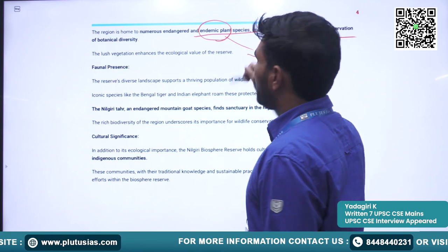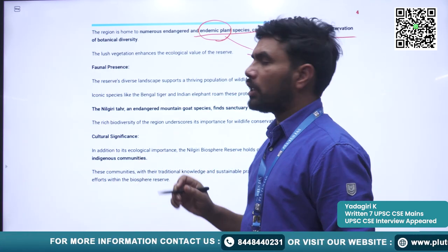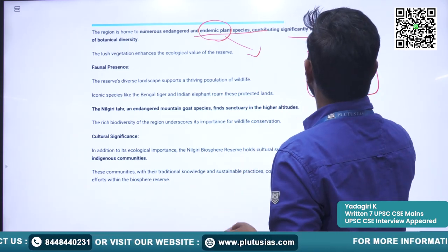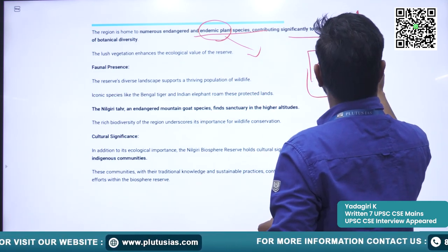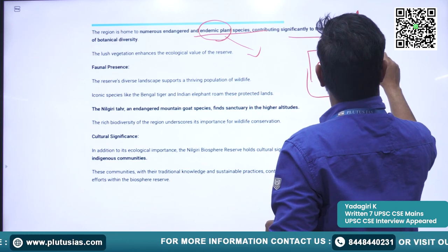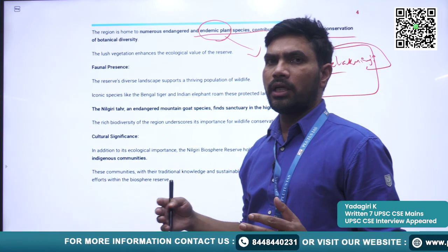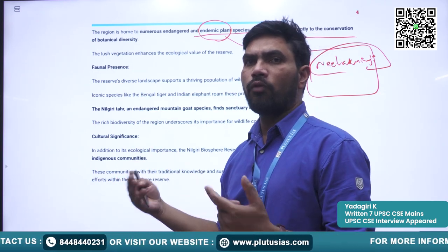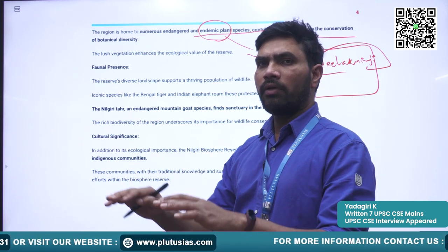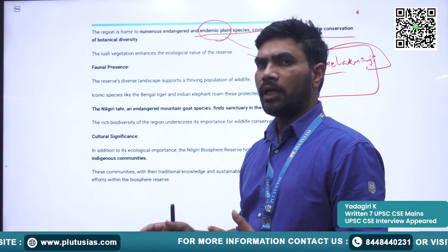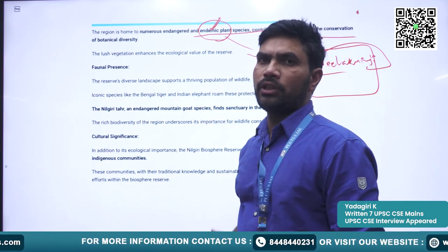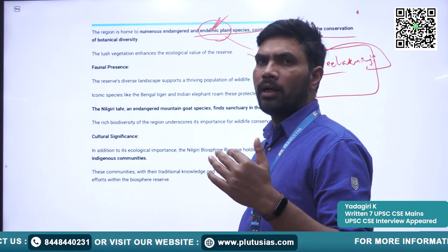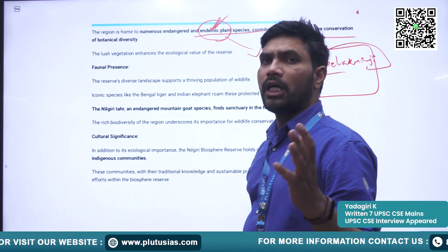Endemic means those species are particular or confined to a specific area. For example, Nilakurinji is found only in this particular area and cannot be found elsewhere. That kind of flora or fauna, when available only in a particular area, is known as an endemic species. We will develop more deeply into the endemicness of particular species when we discuss biodiversity.